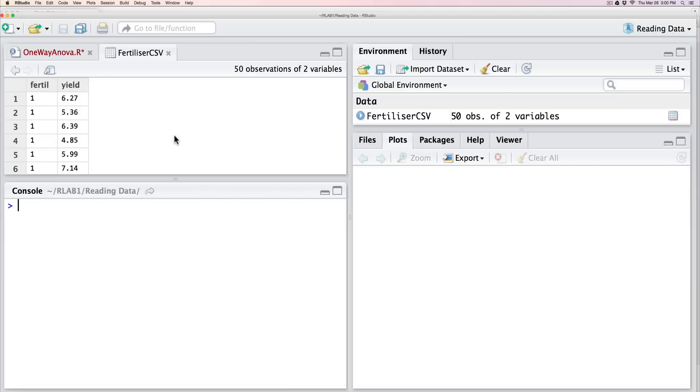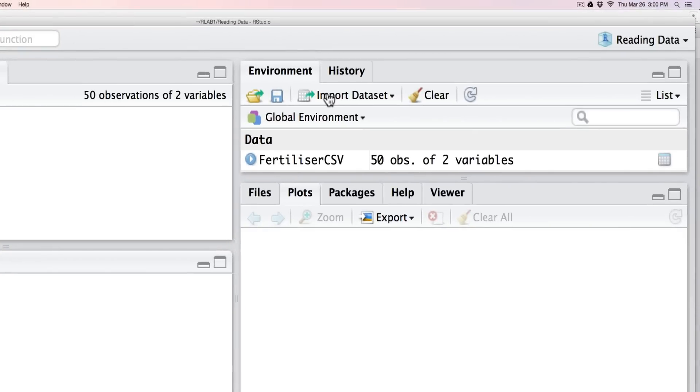What I'm going to be doing is analyzing the yield data according to three different types of fertilizer, and this data were provided and analyzed by Graphen and Hales. So the first thing we would do is import our data, and I've imported it already.